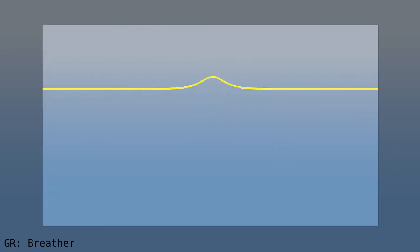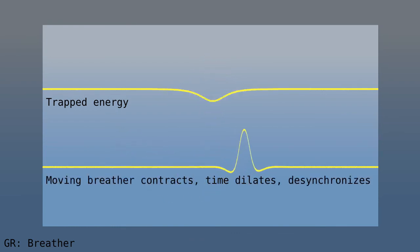Another thing that senses the variable speed of light is the breather from the video on special relativity. There we saw that a breather is a localized wave where energy is trapped in a small region. We saw that it obeys special relativity in that it contracts, slows down, and desynchronizes. It turns out that it also obeys an effect of general relativity. It accelerates towards slower light.